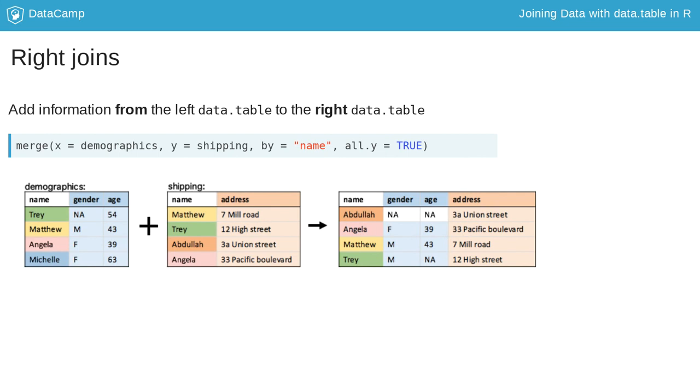Conversely, a right join keeps only the observations that are present in the data table on the right side of the join. The data table on the right side of the join is the data table given to the y argument of the merge function.